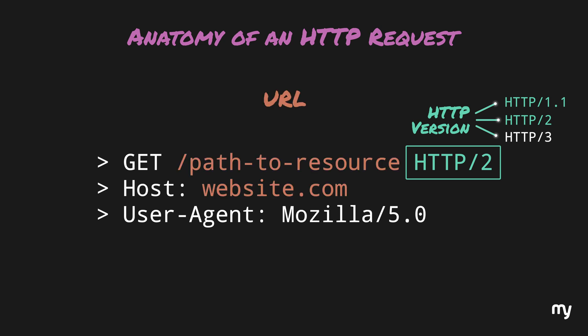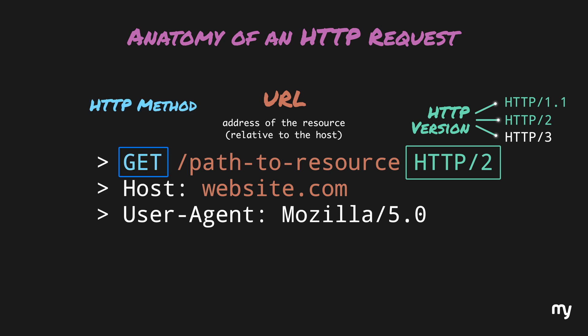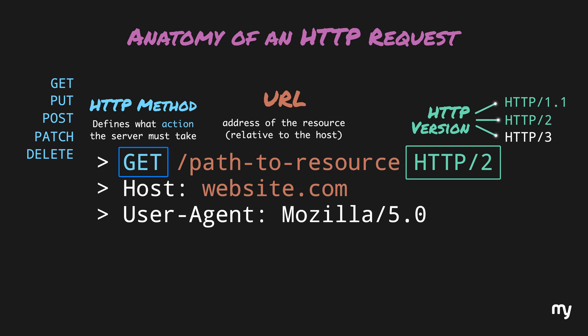Next, you have the URL, which is pretty much the address of the resource where the request will be sent to and processed. Then we have the HTTP method. An HTTP method defines what action the server must take when processing the request. The HTTP method used when you type in a web address to get a website is called the GET method, because it is getting the data from the website. There are a few different request methods, each designed to perform a specific action.